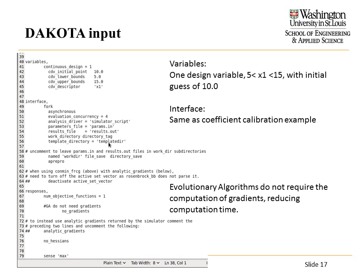Again, I have one design variable X1, bounded from 5 to 15 with an initial guess of 10. I'm using parallel execution with the same simulator script name, params-in, and results-out. No gradients are calculated, which is one of the benefits of a genetic algorithm — it's supposed to reduce computation time compared to gradient-based methods.